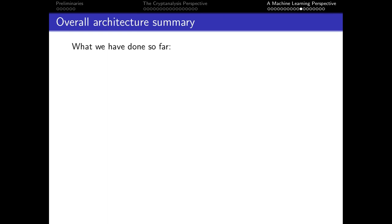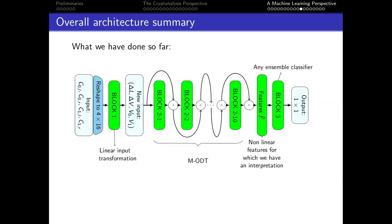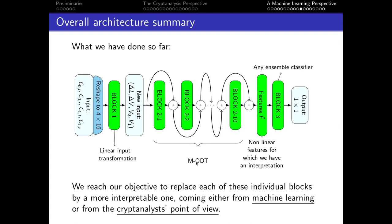To summarize, block 1 performs a simple linear transformation over the input. Block 3 is a non-linear classification step. The 20 CNN layers in block 2 can be replaced by the M-ODT. We have reached our objective to replace each individual block with a more interpretable one — from machine learning for block 3, or from a cryptanalysis point of view for blocks 1 and 2. Now let's replace the blocks step by step and observe the evolution of accuracy.